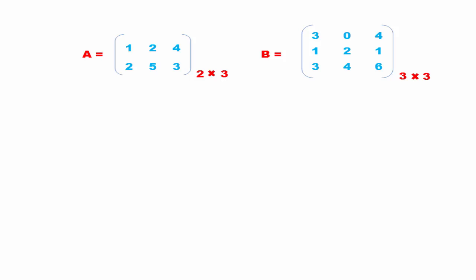Here we take two matrices: matrix A which has two rows and three columns, and matrix B which has three rows and three columns. When we multiply these two matrices, there is only one condition — the number of columns of the first matrix must be equal to the number of rows of the second matrix. Matrix A has three columns and matrix B has three rows, so the condition is satisfied and matrix multiplication is possible.